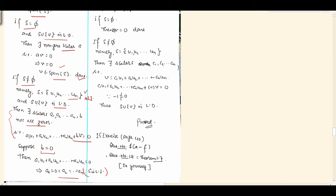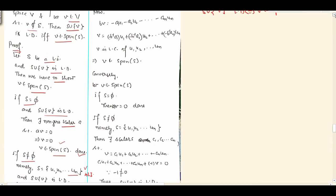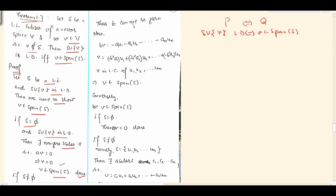But S union v is LD, so B cannot be zero. As B is non-zero, B into v equals minus A1 U1. We took U1, U2, and so on UN to the right-hand side. B is non-zero, so we operated by B inverse from the left. Then we can easily see v is nothing but the linear combination of U1, U2, and so on UN.